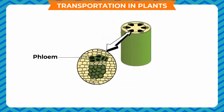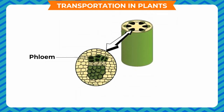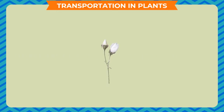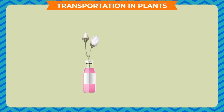Phloem acts as pipelines and carries the prepared food to all parts of the plant. To demonstrate transport of water in stems, take a long stem of a balsam plant bearing white flowers and dip the cut end of the stem into a bottle of colored water. After a while, the white flower will change color, showing that the colored water from the bottle has reached there through the stem. This activity shows that the stem helps in transport of water.